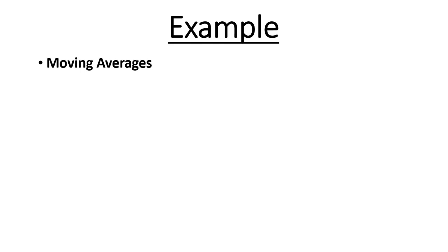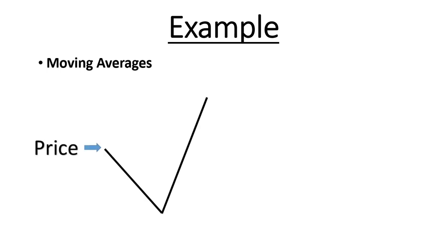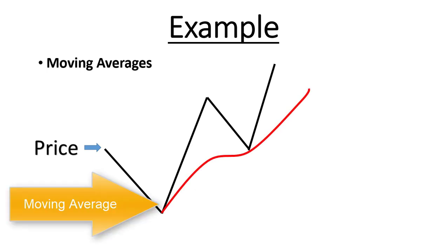Moving averages — our third type. These are not straight lines; they are moving lines. So here is the price, here is our moving average, and as you can see the price bounces: one time here and one time here. So this moving average is our support in this example.